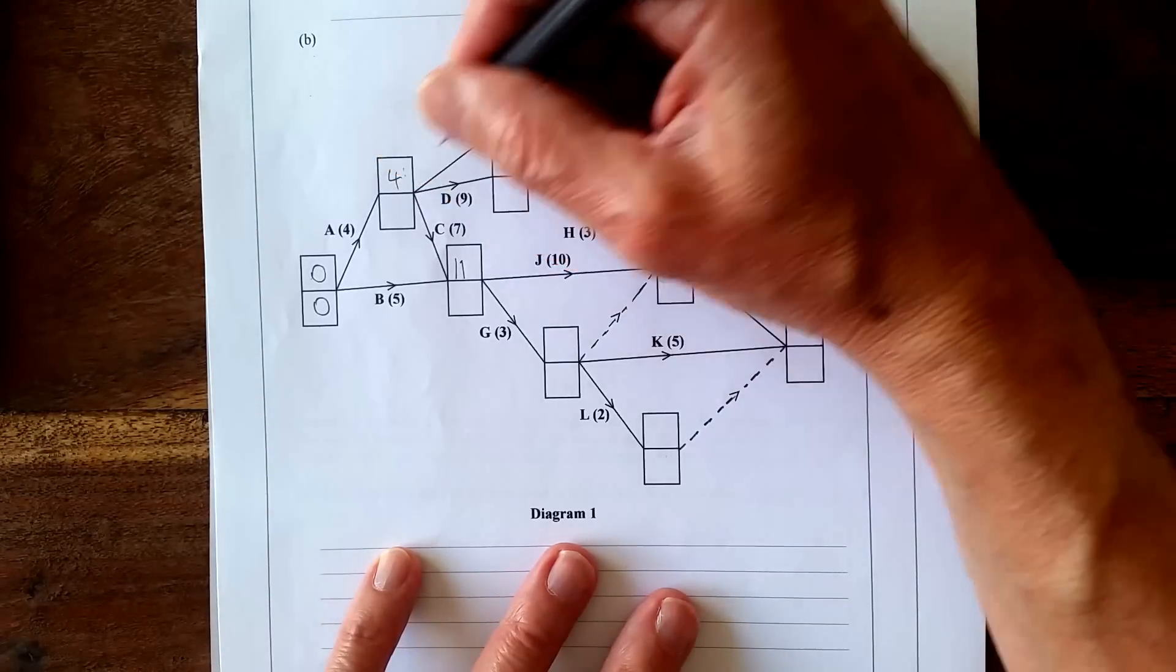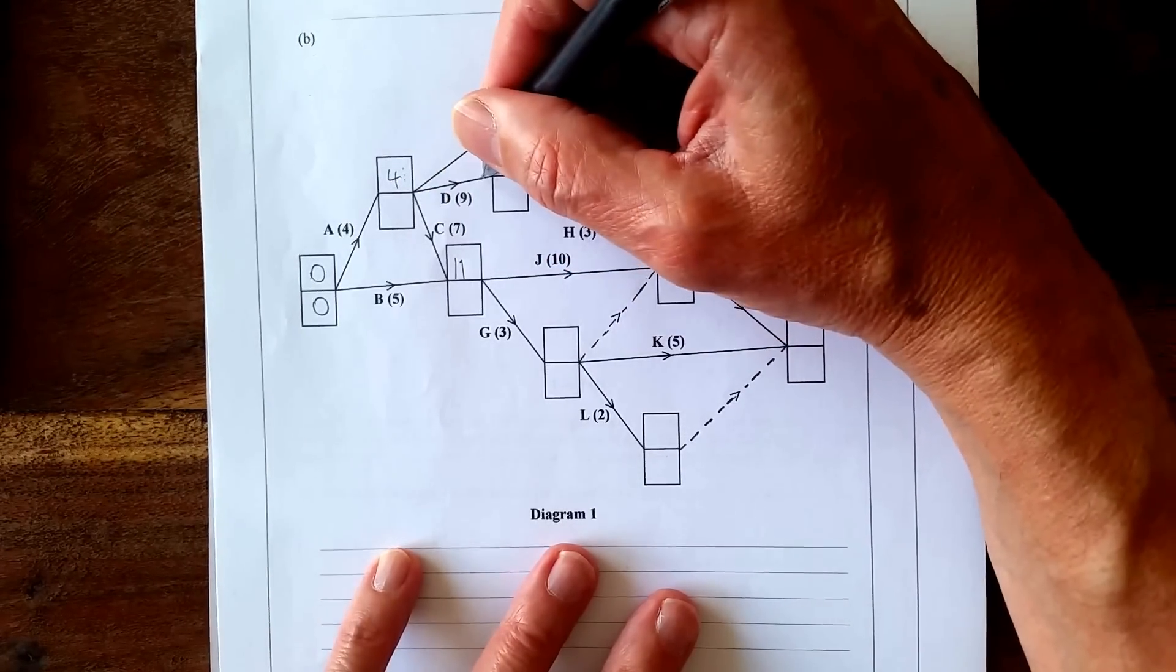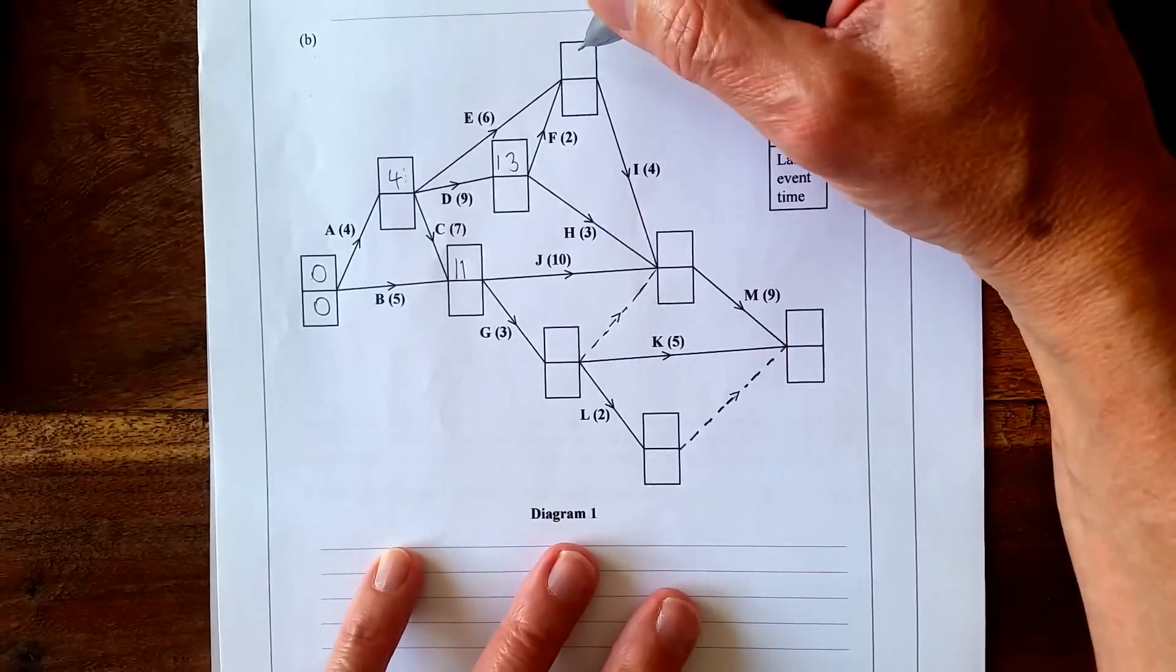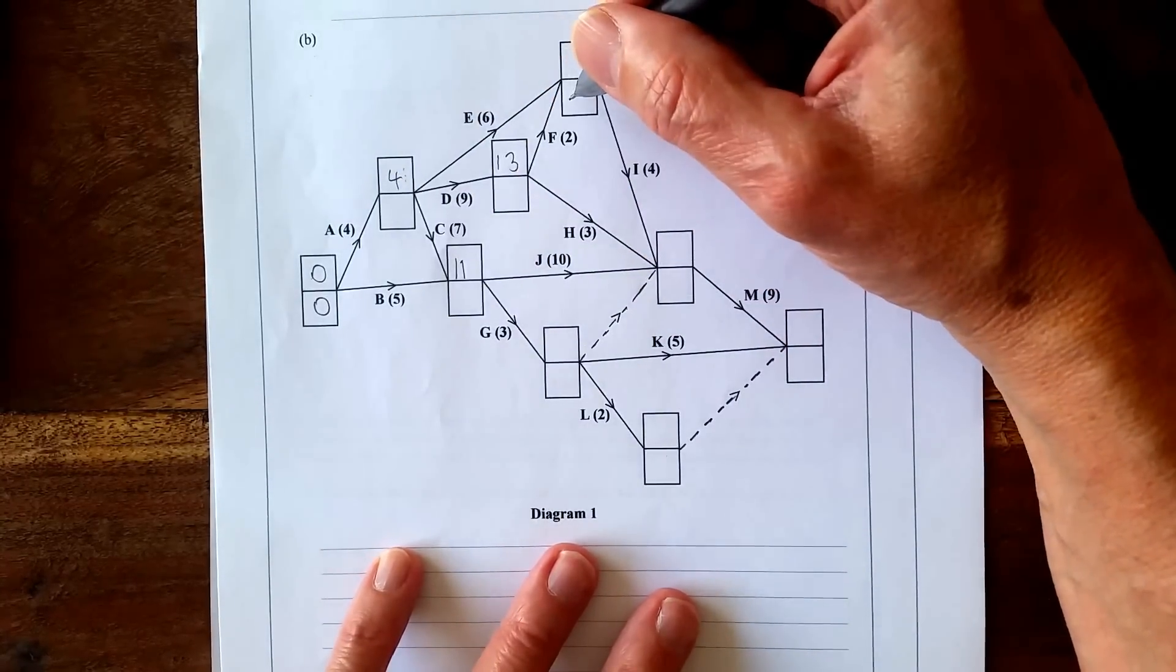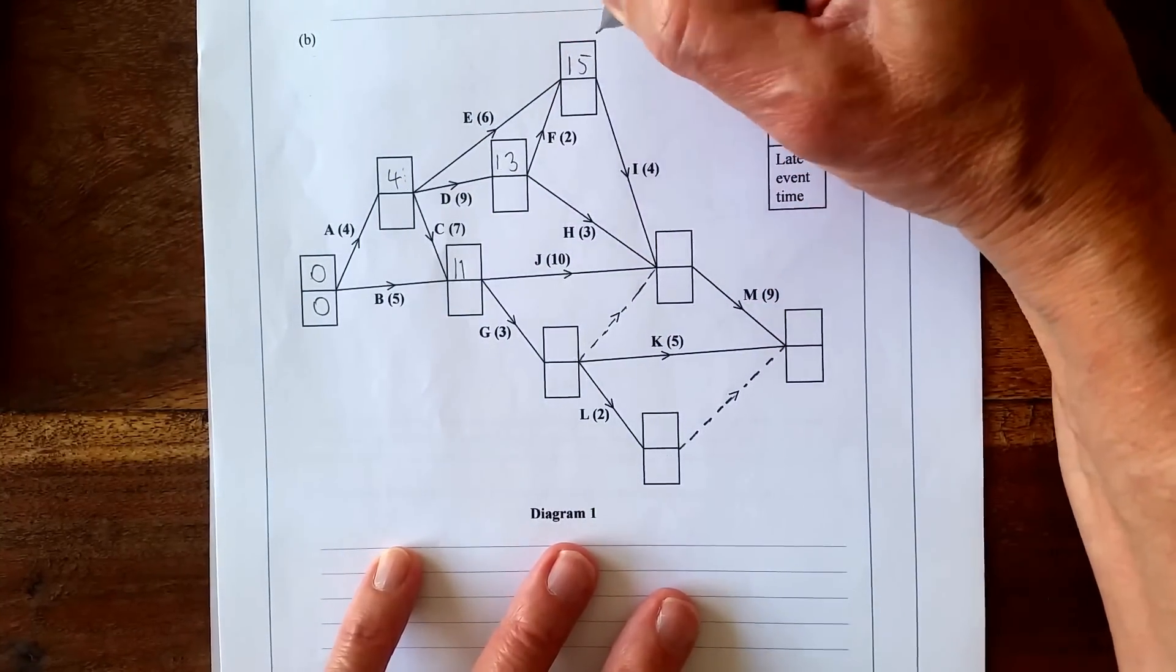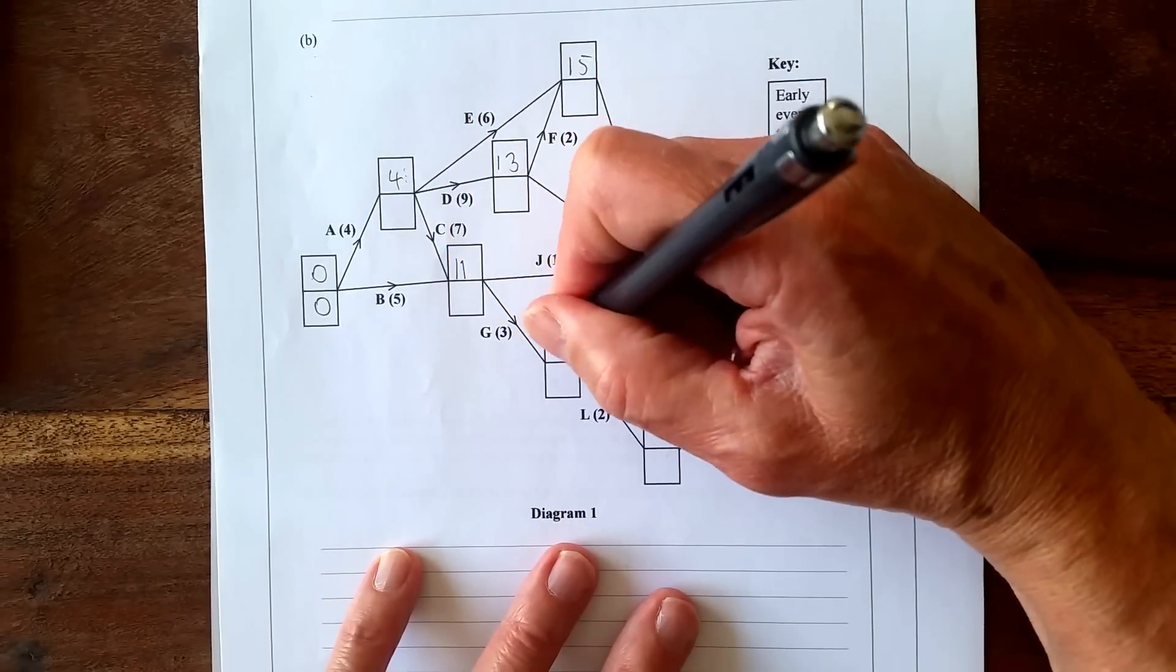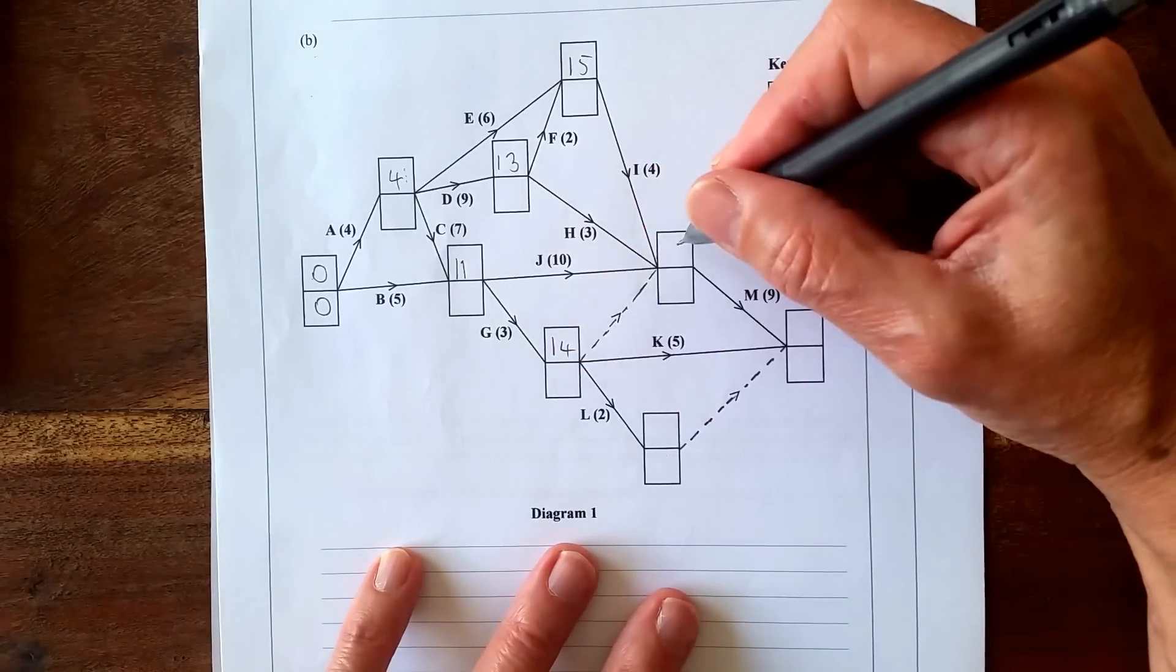And then we've got 4 plus 9 is 13, and we've got 4 plus 6 is 10, and 13 plus 2 is 15, so put 15 there. And this one, 11 plus 3 is 14, and then 14 because this is a dummy, so that's 14 there.